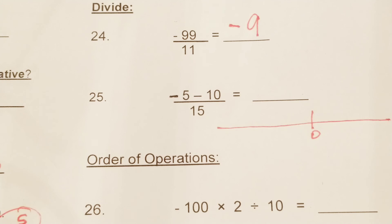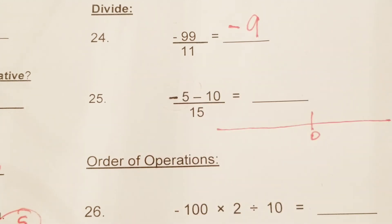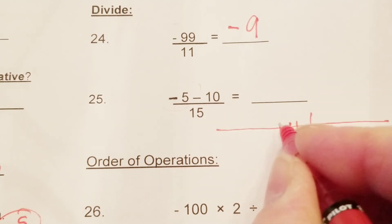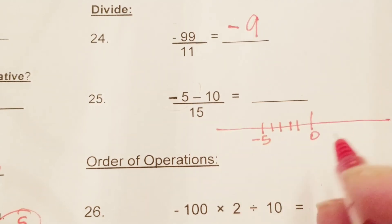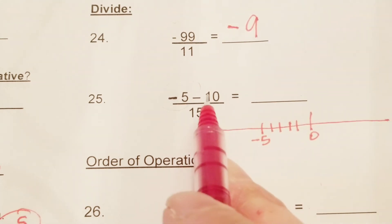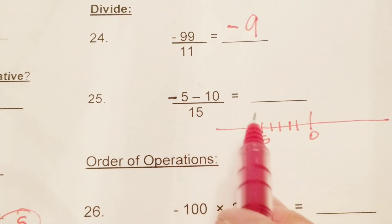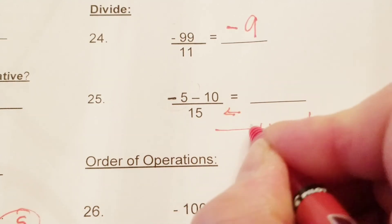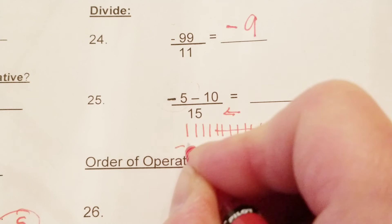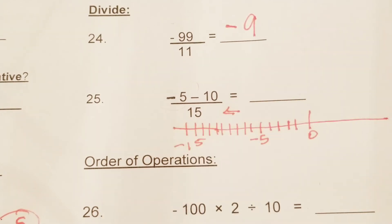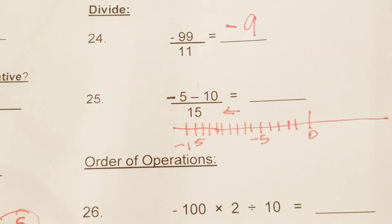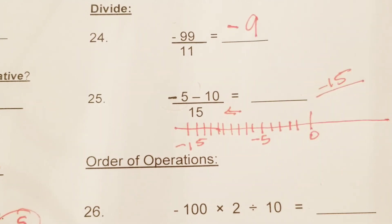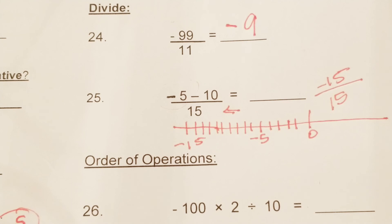Let's look at the number line and start with our first number — negative 5. So let's go back 5 spaces, that lands us on negative 5. Then we subtract 10, so we go 10 more spaces in the negative direction, and that lands us at negative 15. So our new problem is negative 15 in the numerator and 15 in the denominator.